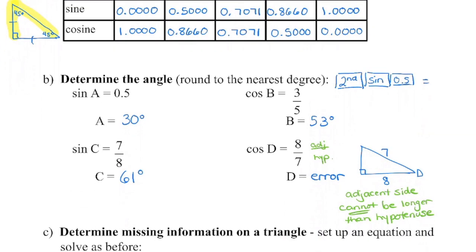Continuing on, you should have got 61° for angle C, and you probably got an error with angle D. Ask yourself why. This is a cosine ratio, so with D as the reference angle, cosine compares the adjacent side to the hypotenuse. That means the adjacent side is 8 units and the hypotenuse is 7 units. But the hypotenuse in a right triangle must be the longest side — so this can't happen, which is why the calculator gives an error.